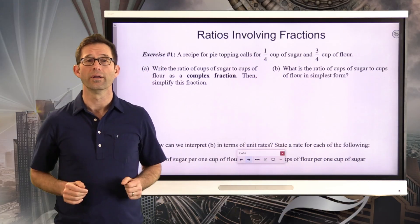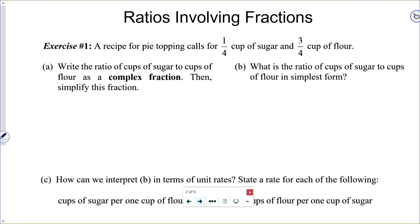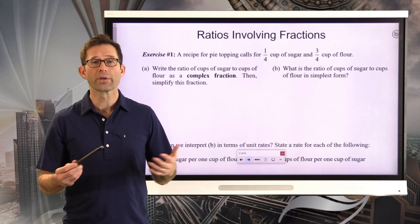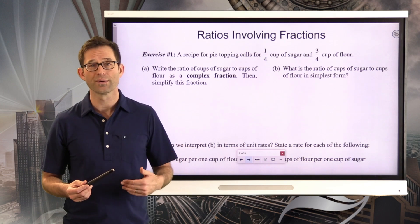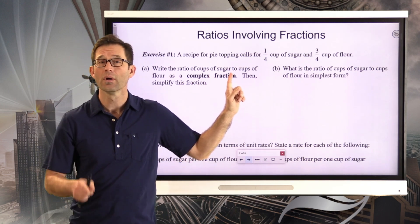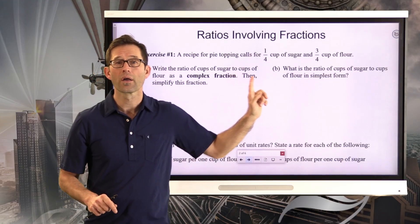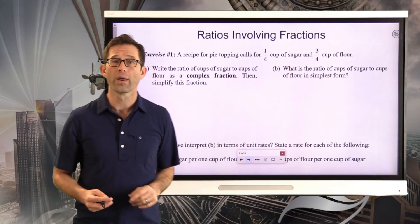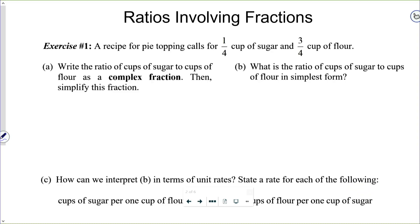Ratios involving fractions, exercise number one. A recipe for pie topping calls for one-quarter cup sugar and three-quarters of a cup of flour. Letter A says: write the ratio of cups of sugar to cups of flour as a complex fraction, then simplify this fraction. Whenever we're looking at a ratio, we want to make sure we know what's the numerator and what's the denominator. Here it's cups of sugar in the numerator, to — that's the fraction bar — cups of flour. So we're going to have one-quarter cup of sugar divided by three-quarters cup flour.